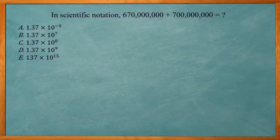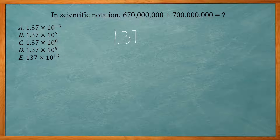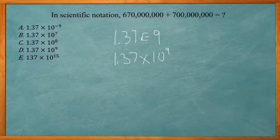This one says, 670 million plus 700 million — what is that in scientific notation? I'm going to change my calculator to scientific notation mode. Go to Mode, and along the top you see Normal, SCI, and ENG engineering. SCI is for scientific notation, so move the cursor there, press enter to select it, then go back to the main screen with second mode. Type in 670,000,000 plus 700,000,000 and press enter. It gives the number in scientific notation: 1.37 E9, which is 1.37 times 10 to the ninth power. Answer choice D.